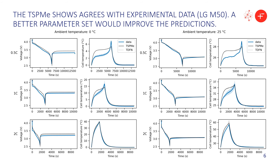When we go down to zero degrees Celsius, even adjusting some parameters like the diffusivity in the particles, the prediction is significantly worse. Notably, the two models — TSPME and TDFN — do very similarly. So the issue is not with the model reduction, because the TDFN does equally poorly or equally well depending on the case. We think the problem is actually with the parameter set: this parameter set for the LGM-50 is based on our previous work and does not account for temperature variation of the parameters, which would need to be incorporated to improve the disagreement.